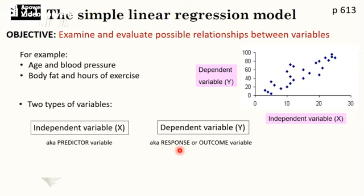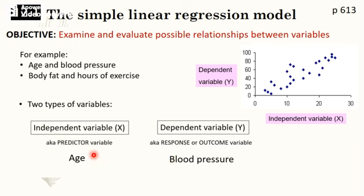If we classify age and blood pressure: age is going to be the independent variable because that's what's going to have an influence on a person's blood pressure. If you know a person's blood pressure, it doesn't necessarily tell you anything about their age. The independent one has an impact on the other one — it's not a two-way relationship. Think of it like this: I have a little sister; I influence my little sister but she doesn't influence me. So I'd be the independent variable and she's the dependent one.